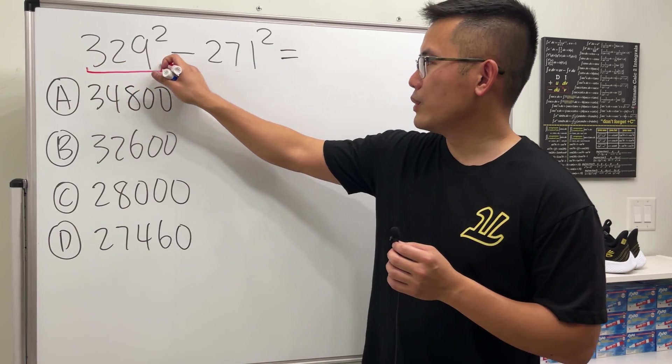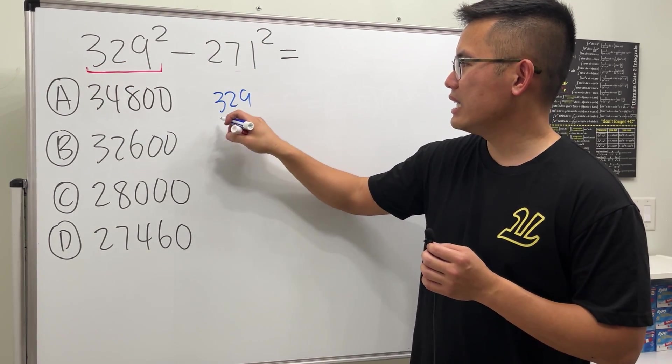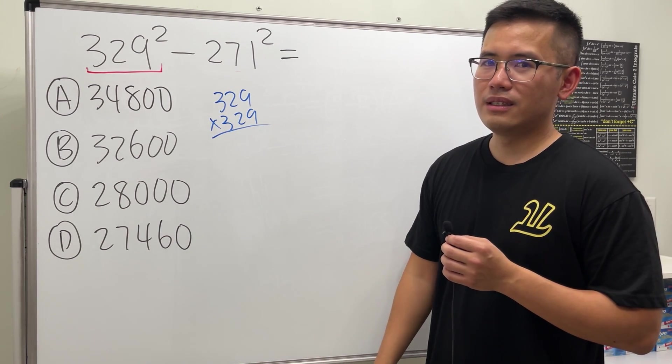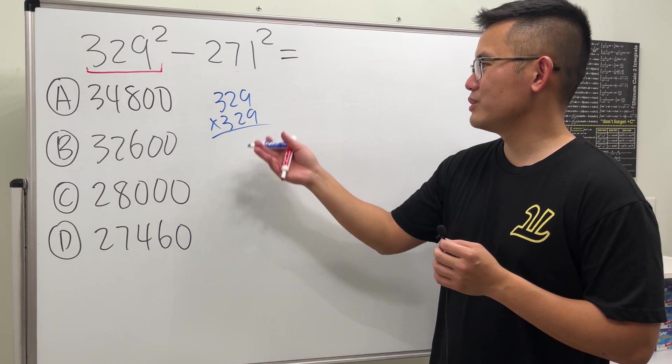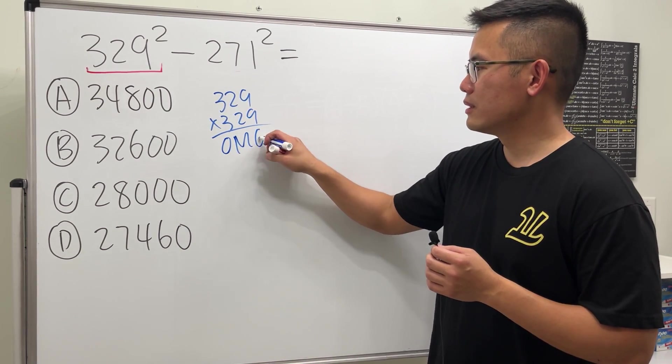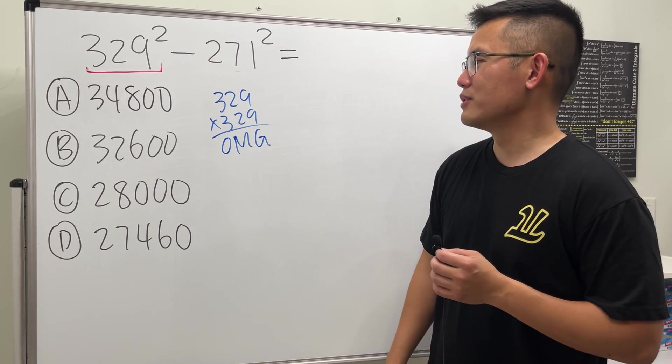So it looks like we have to do 329 squared - that's 329, write it down twice and we multiply. Oh man, how do we multiply two numbers with three digits? What's the answer for this? Oh my god, it's too hard.